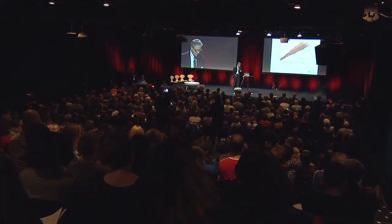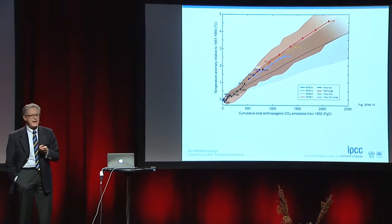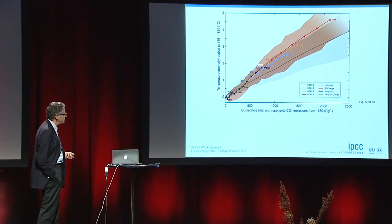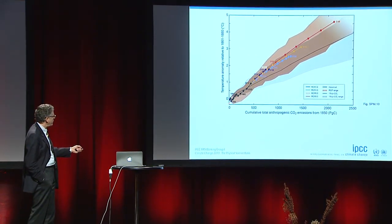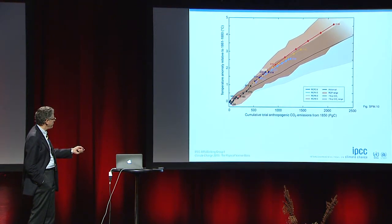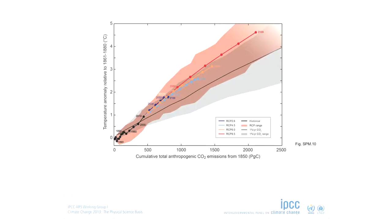And what you see, if you do the historical account of what happened until the year 2010 — where did we fare on this curve? 1890, 1950, 2000, 2010. There is a clear relationship, a proportionality between these two quantities — between the total amount of emissions and the warming. It is actually fairly linear.